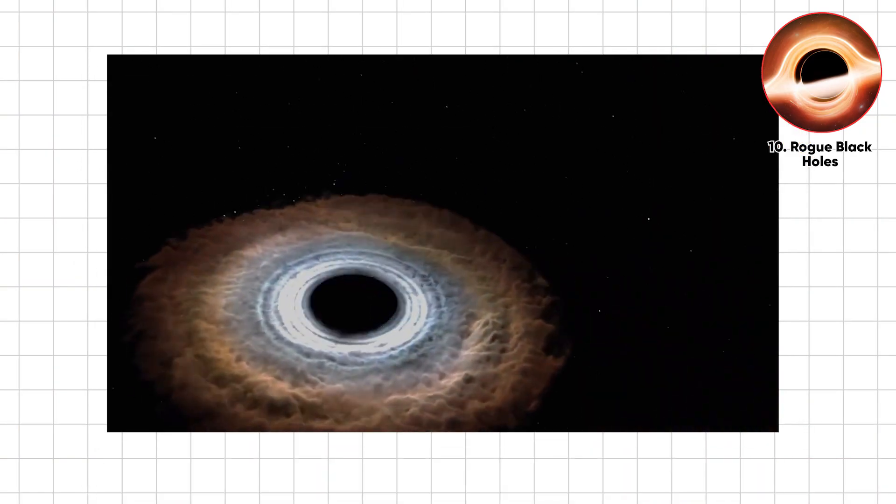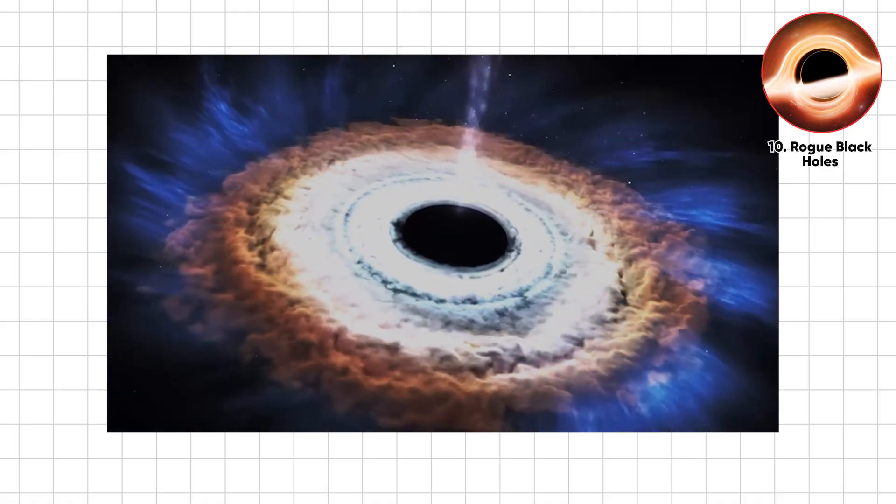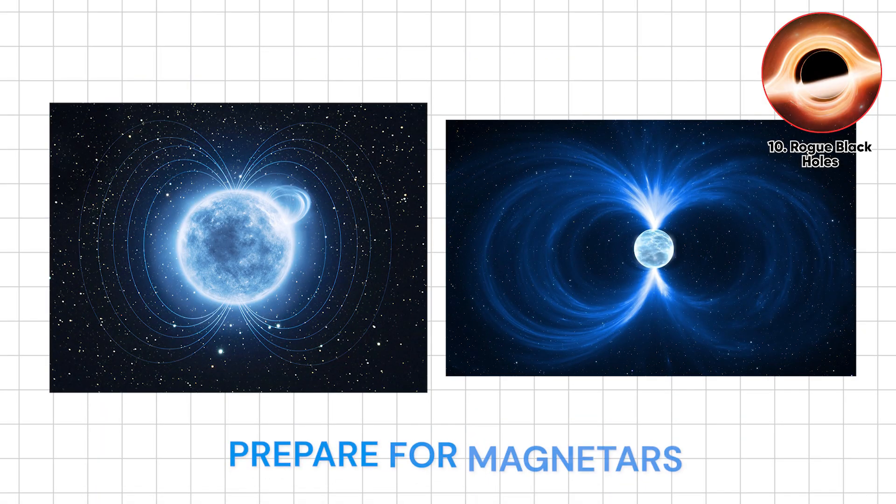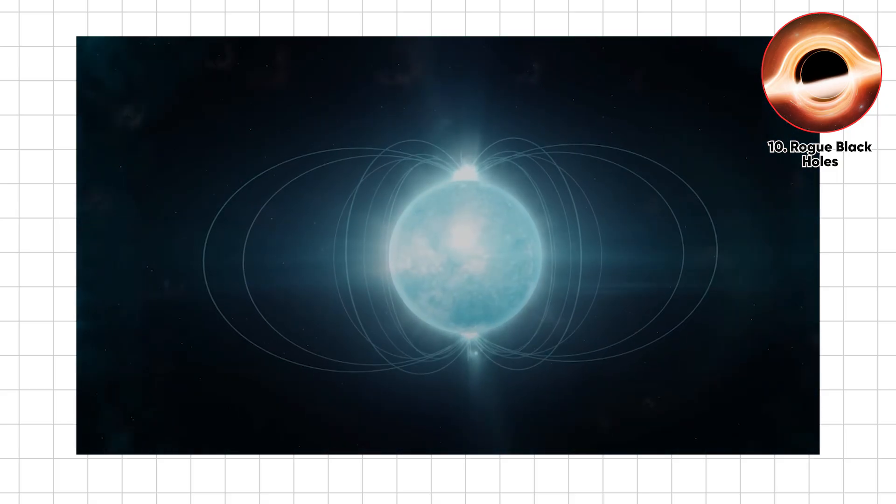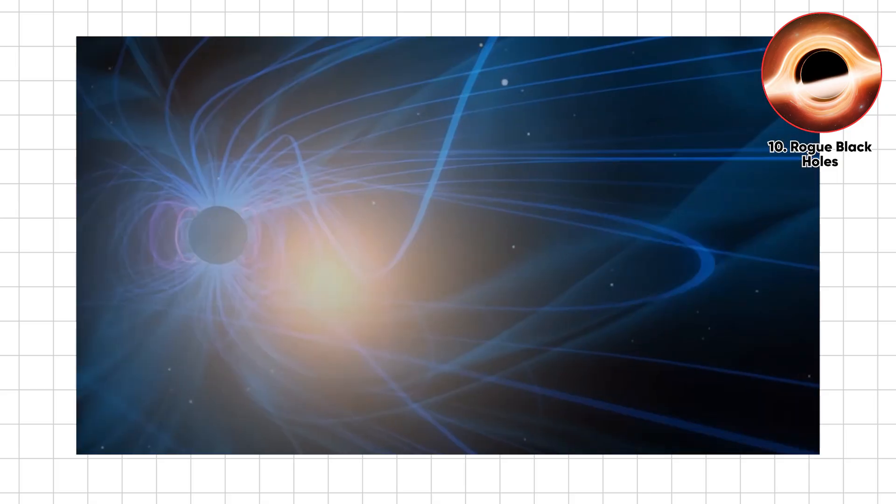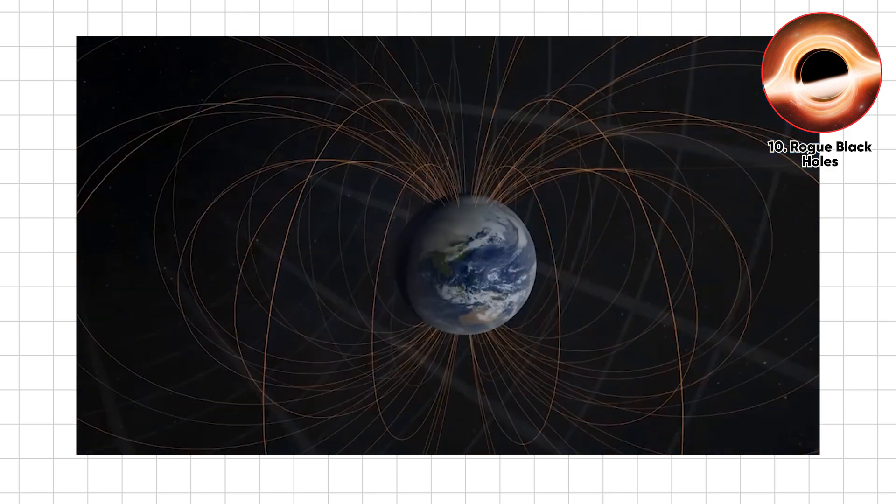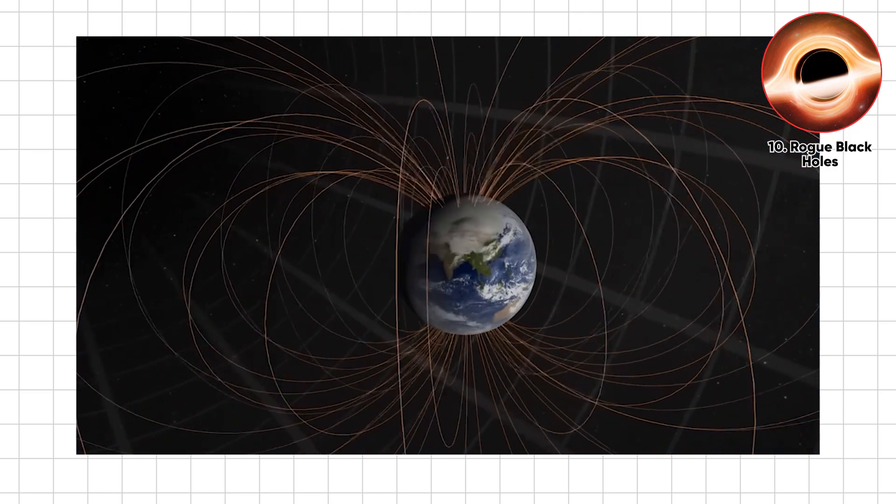And if these invisible menaces don't make your pulse race enough, prepare for magnetars. Colossal neutron stars with magnetic fields so strong they could scramble atoms like cosmic play-doh and unleash deadly bursts that make gamma ray bursts look tame.